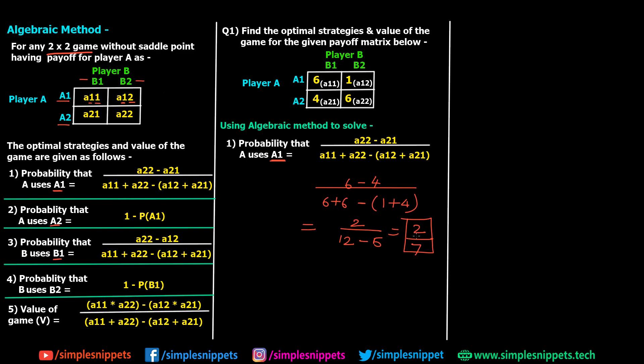Since this is a mixed strategy, obviously we have to calculate probabilities of individual strategies for player A and player B. We found out the first one. Now obviously A2 is going to be 1 minus 2 by 7. So probability that A uses A2 is 1 minus P of A1, so it's going to be 1 minus 2 by 7, which is 5 by 7. So we've got the two probabilities of A1 and A2.